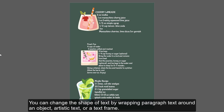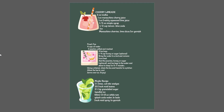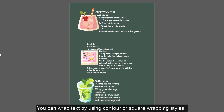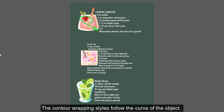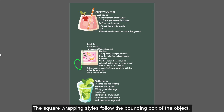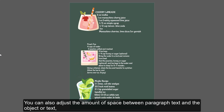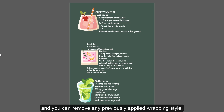You can change the shape of text by wrapping paragraph text around an object, artistic text, or a text frame. You can wrap text by using contour or square wrapping styles. The contour wrapping styles follow the curve of the object, while the square wrapping styles follow the bounding box of the object. You can also adjust the amount of space between paragraph text and the object or text, and you can remove any previously applied wrapping style.